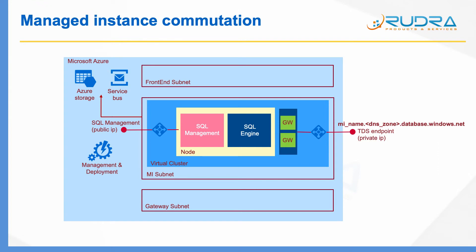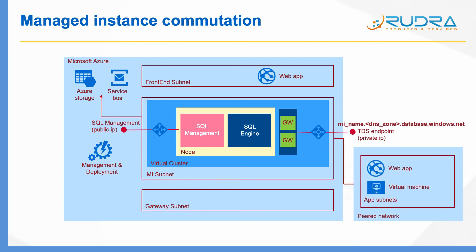In terms of client connections and applications connecting to the database, they can reside in the front-end subnet and connect to the database, or they can reside in a peered network. Once you peer the network with your MI subnet, all the web apps or virtual machines can connect to the database because both networks are peered. You can also connect your on-premises applications to this database by creating either a virtual network gateway or an ExpressRoute. All connections — whether from web apps, virtual machines, or on-premises applications — are communicating with the database over a private connection.